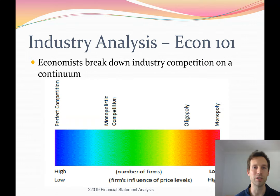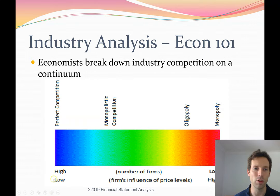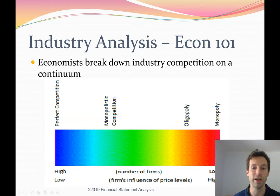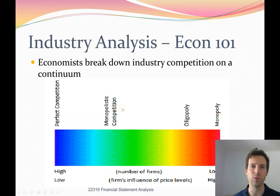We're going to start with a little revision from your introductory economics subjects and reflect on how economists discuss industry competition. On one side, we have perfect competition, where there are lots of competitors, a high number of firms, and low influence over price levels. At the other end, we have a monopoly — one firm, low number of firms, and high influence on pricing. Somewhere in between, we have an oligopoly or duopoly with two to around ten or fifteen firms, or monopolistic competition, where most industries sit with a normal level of competition.